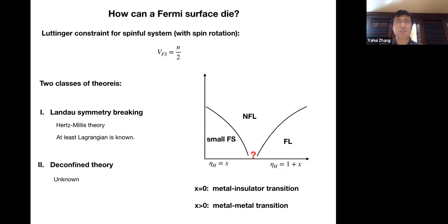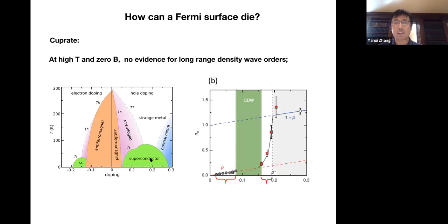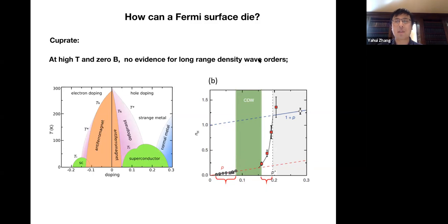Let me show you some examples of why we want this exotic theory and why Landau symmetry breaking is not enough. The first example is in cuprates. When we hole-dope the Mott insulator in cuprates, we first get a pseudogap phase, then when we increase doping further we get a Fermi liquid, and in the middle there is a strange metal. From the last decade, people doing high-field measurements, which suppress superconductivity, found that at large doping the hole number is 1+p, in agreement with the Luttinger constraint. But below some critical doping it seems we only have a smaller Fermi surface. In cuprates, at least at high temperature and zero magnetic field, we don't find evidence for long-range density wave orders. This suggests that Landau symmetry breaking cannot work for this evolution and we need some more exotic theory.